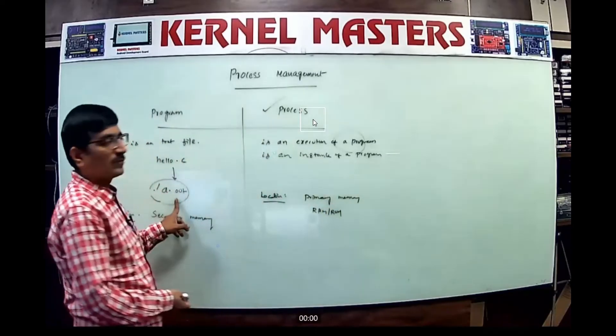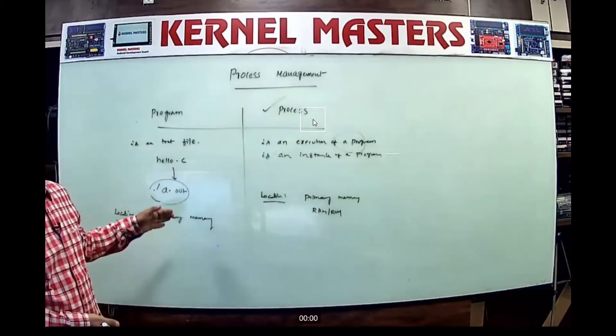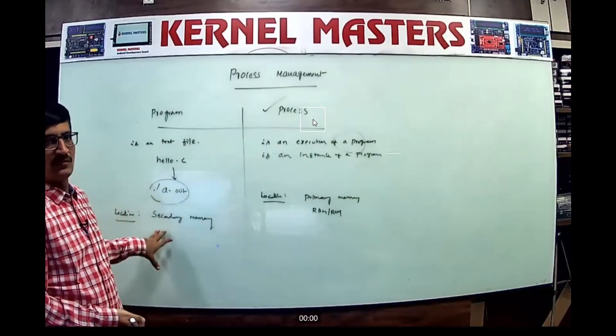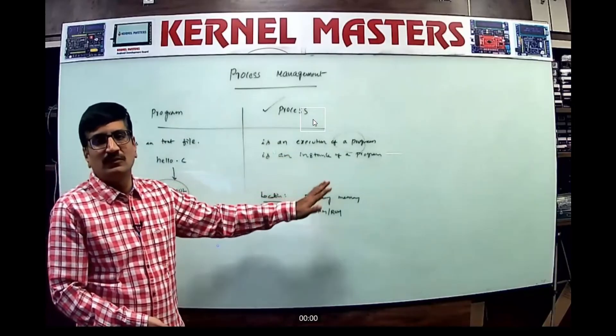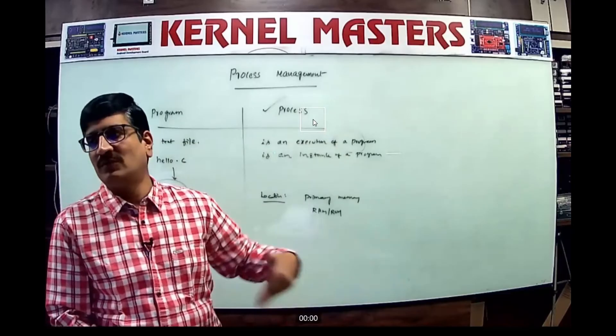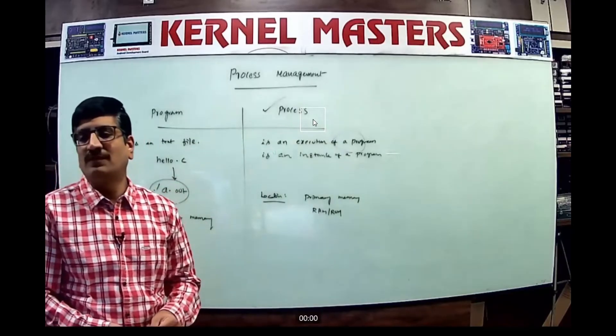Your hard disk contains the a.out file. Once you execute the a.out file, it moves to RAM. The microprocessor finds the location and runs instruction by instruction. One more difference - a program is a passive entity, never running, just a standalone entity.